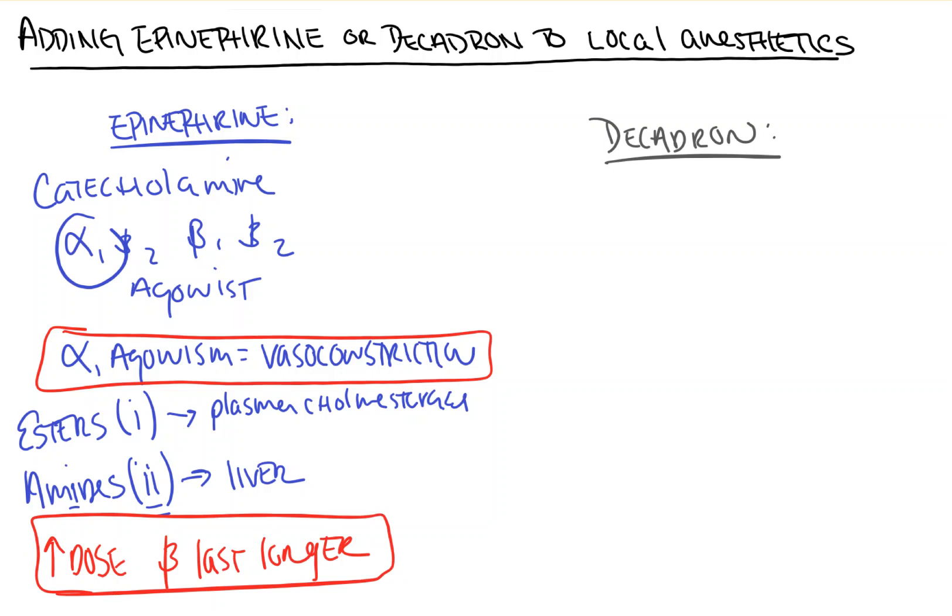Now, the mechanism of action of decadron is a little bit more nebulous in that decadron and steroids in general are anti-inflammatories. The reason these two are grouped together in this video is that the thought process is that as you introduce an anti-inflammatory into a region like decadron, you lead to vasoconstriction, which would lead to a similar effect to that of epinephrine.